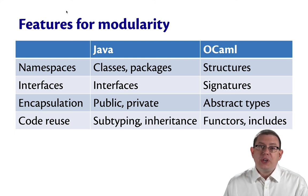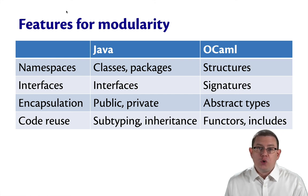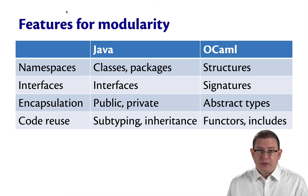Finally, code reuse is an important part of modular programming. We want to be able to reuse the code modules that we create, rather than have to rebuild everything from scratch any time we want to build a new piece of software. Java provides code reuse mechanisms through subtyping and inheritance, mainly through the extends keyword that you learned in 2110. OCaml provides fairly different mechanisms for code reuse called functors and includes, and we'll be studying that at the end of this week's videos.